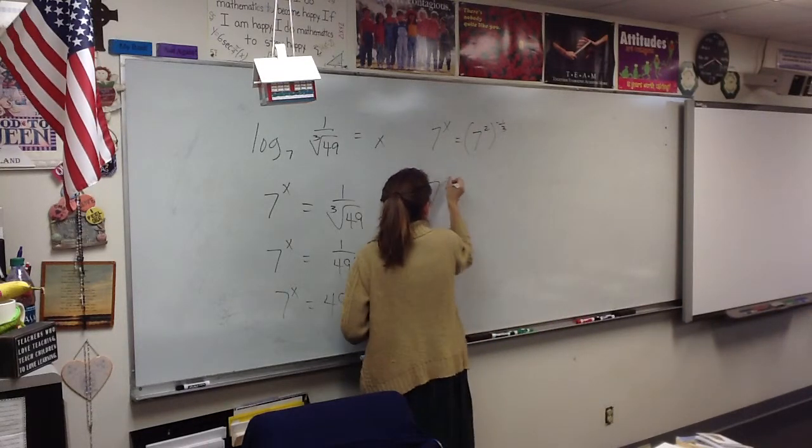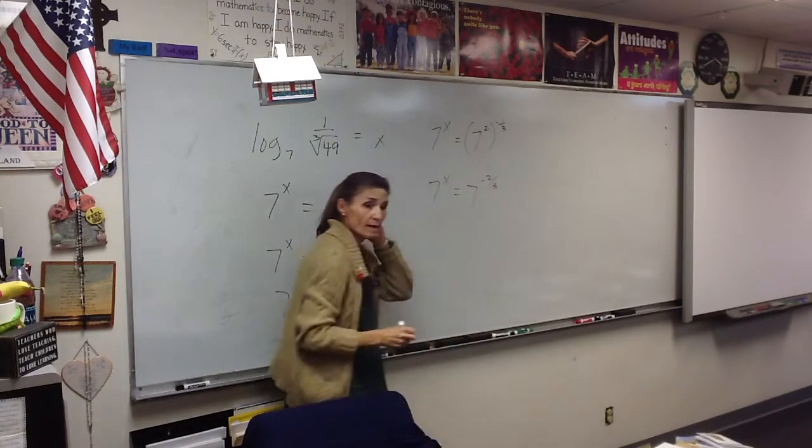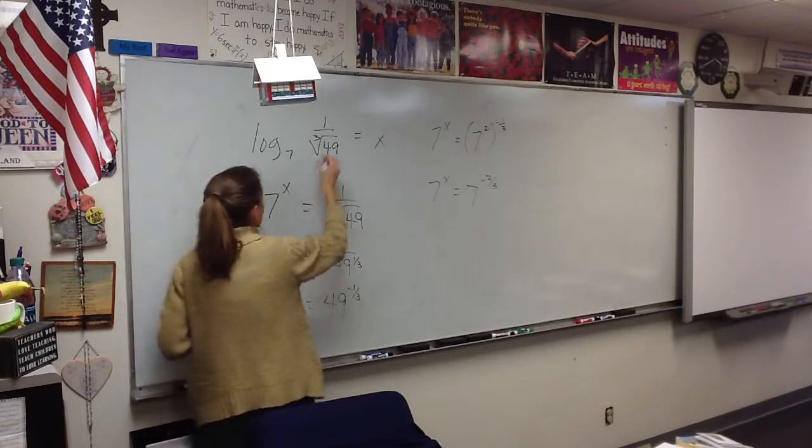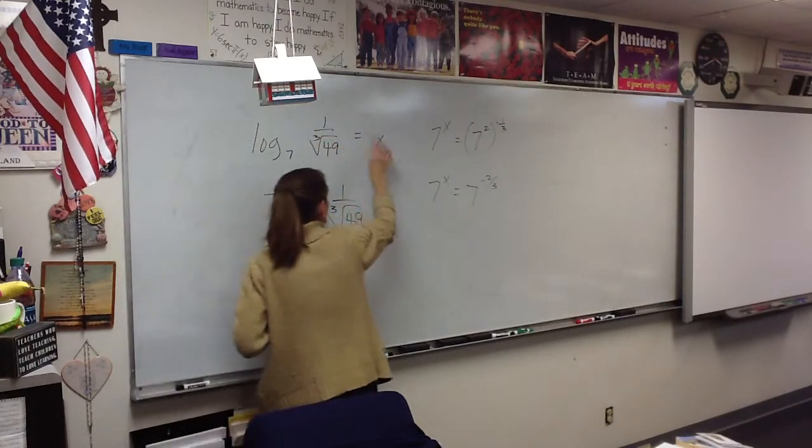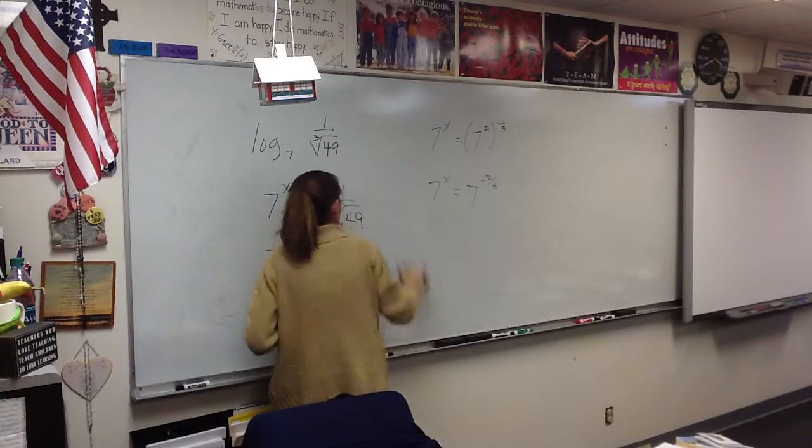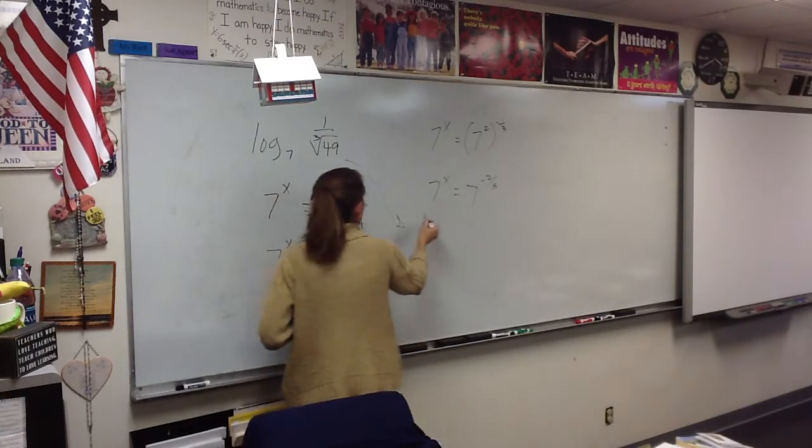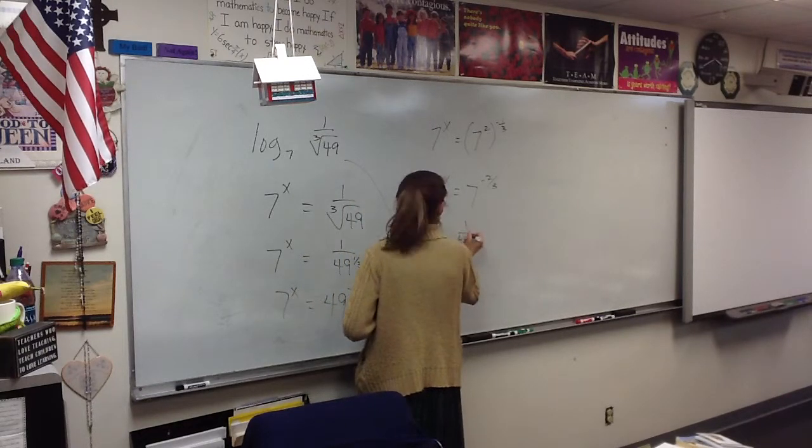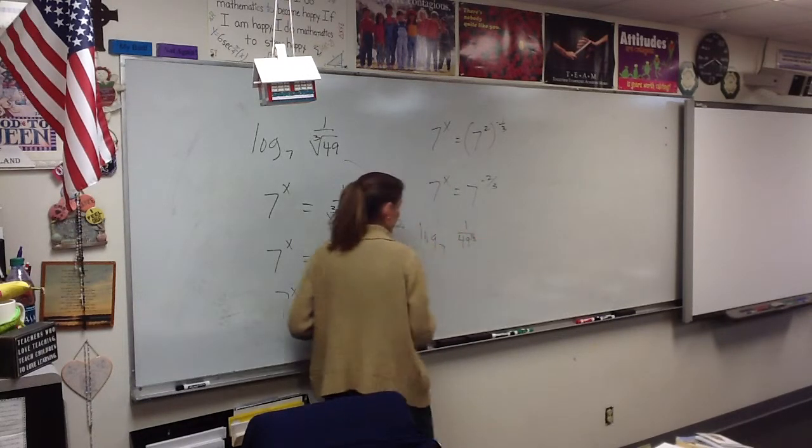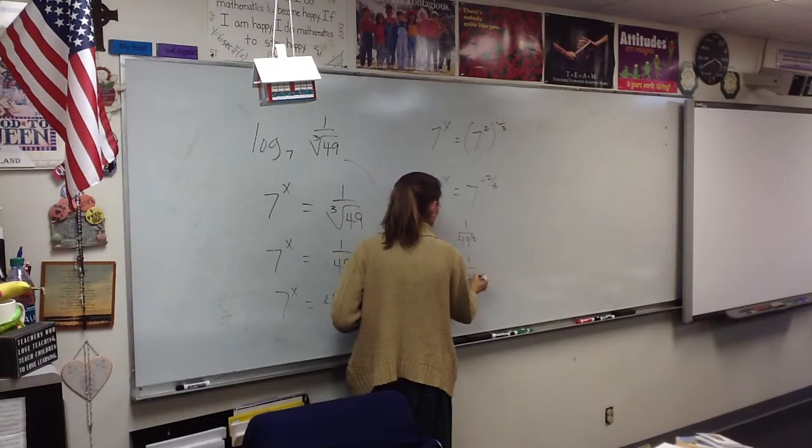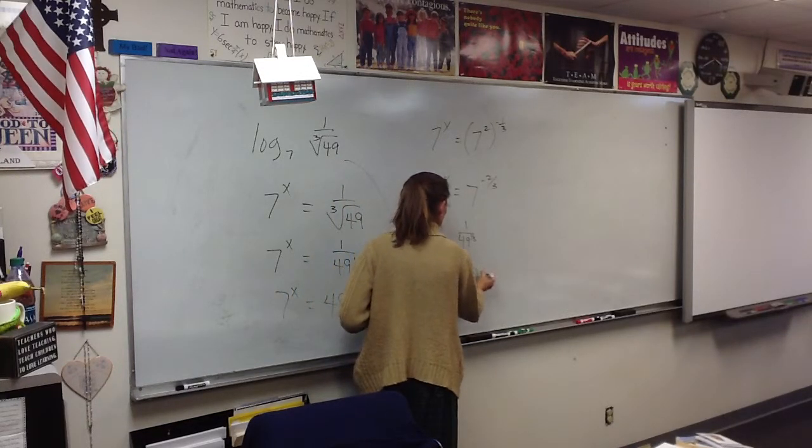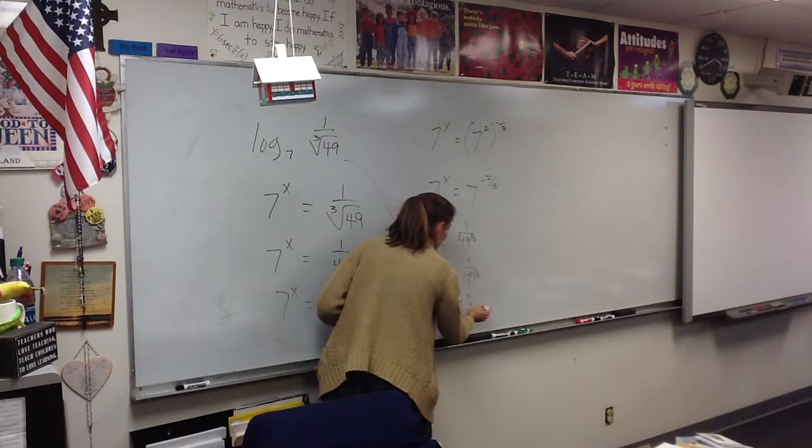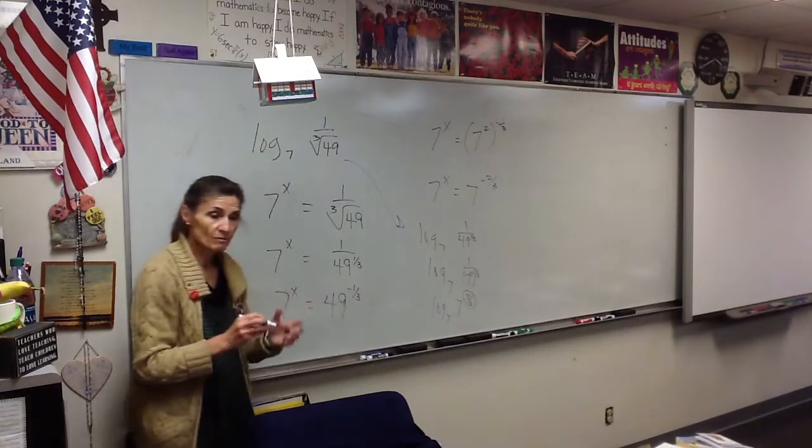So 7 to the x equals 7 to the negative 2 thirds, so x equals negative 2 thirds. You could also have just handled it here without doing this part. You could have just said, okay, this is the log base 7 of 1 over 49 to the 1 third, which is the log base 7 of 1 over 7 squared to the 1 third. The log base 7 of 7 to the negative 2 thirds, which would be negative 2 thirds.